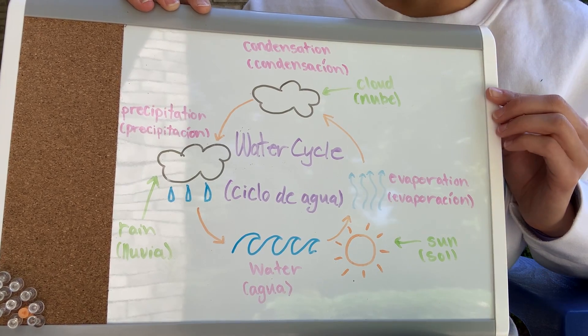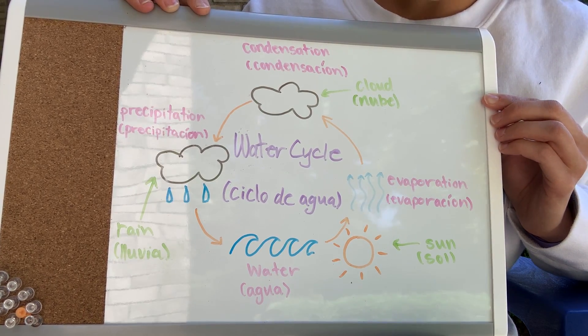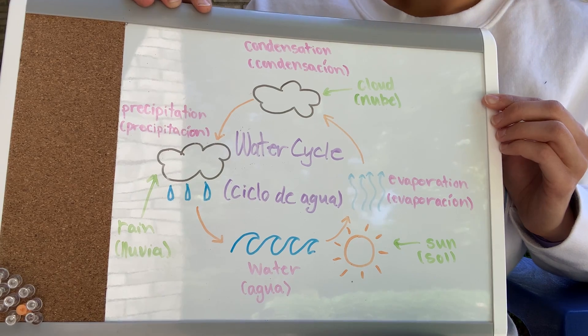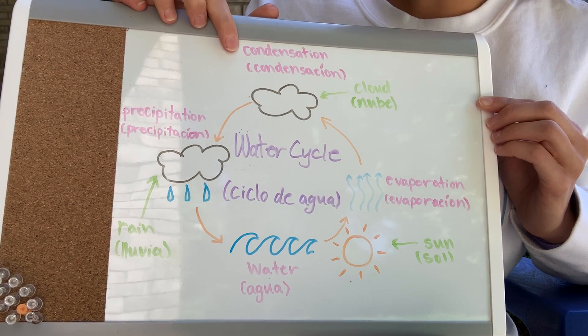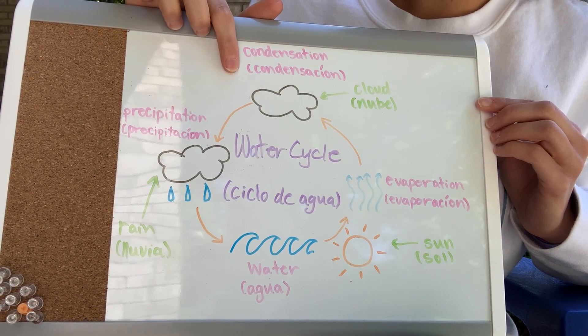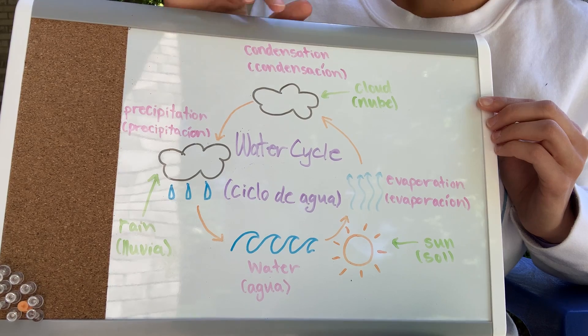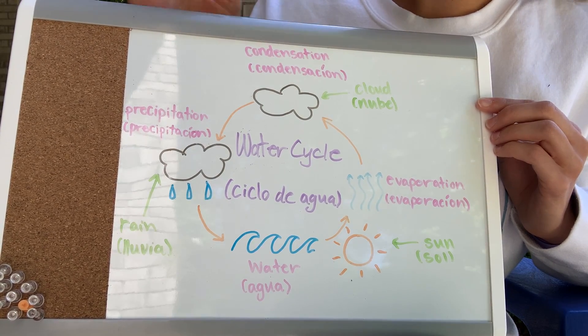When the water in the air reaches the atmosphere it forms condensation, condensación, which is a cloud, la nube.